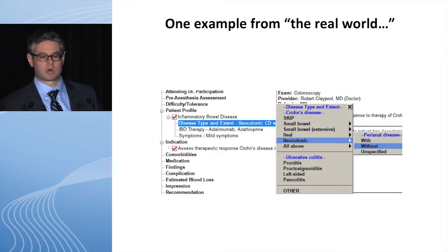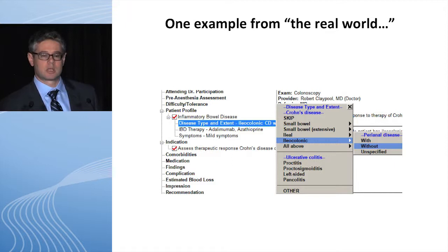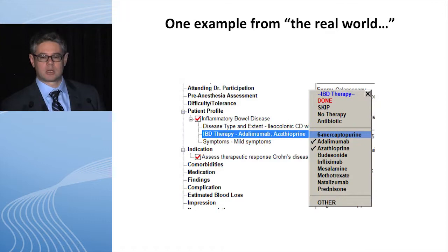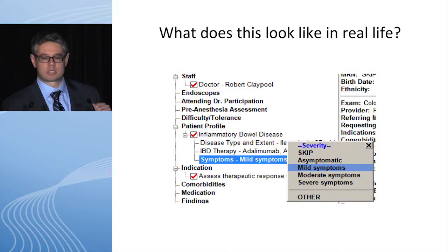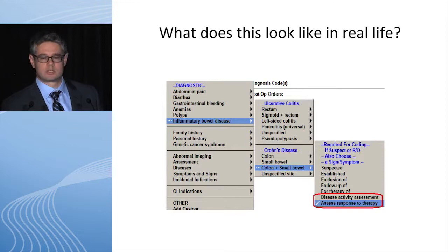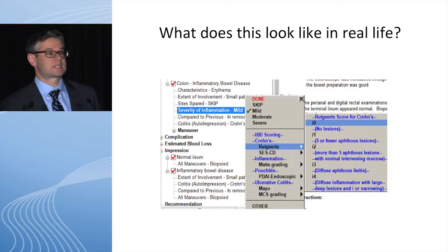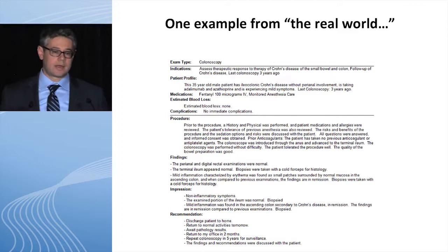This is a real-world example using Probation software, which has a very simple drop-down menu for walking through elements of an endoscopy report. The patient profile: disease type is ileocolonic without perianal disease. What therapy was the patient on? Checking off the common IBD medications. Is the patient symptomatic? Checking off patient has mild symptoms. Why are we doing this procedure? The patient has colon and small bowel disease and we want to assess response to therapy. Based on the appearance of the anastomosis, the Rutgeerts score was I0. The software then puts it all together into a nice report with actual verbiage that can be sent off to the referring provider.